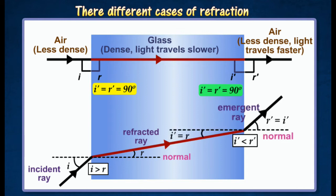The last case is when the ray of light passes from glass to air. Glass is denser than air. In this case, the ray bends away from the normal and the speed of light increases after emerging from the glass.